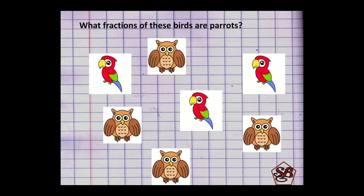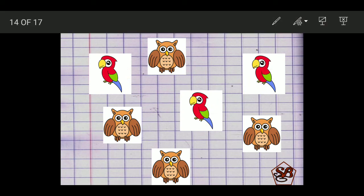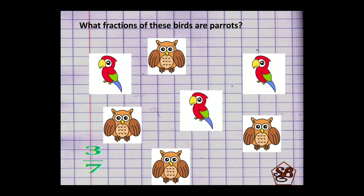The next one. What fraction of these birds are parrots? Now there are two types of birds in this: 1, 2, 3, 4, 5, 6 and 7. Total are 7 and out of that some are owls and some are parrots. We have to find out the fraction of parrots: 1, 2 and 3. 3 are parrots. So the fraction formed here will be 3/7, as 3 are the parrots and total number of birds are 7.